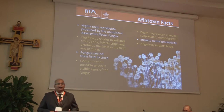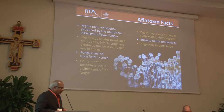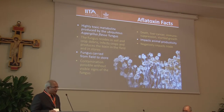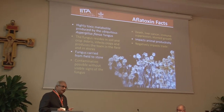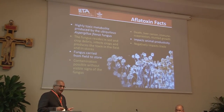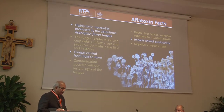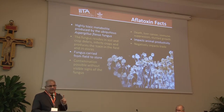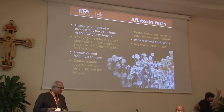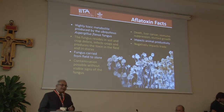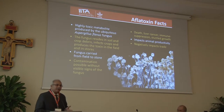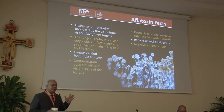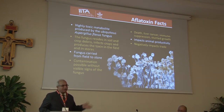Aflatoxin 101: what is aflatoxin? It's a toxin produced by the fungus Aspergillus flavus. This fungus resides in the soil, stays in crop debris, multiplies in the soil, and produces the toxin both in the field and in stores. The fungus is carried from the field to the stores — that's the first thing to understand. Aflatoxin is not a post-harvest problem alone; it's actually a pre-harvest issue that goes into the post-harvest. Contamination is possible without visibly seeing the toxin or the fungus. There are plenty of health effects and trade effects that all of you are aware of.